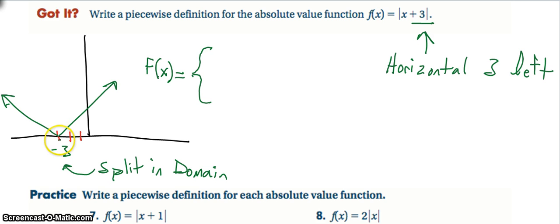So then it would look something like this and that makes my negative three, the split in the domain.